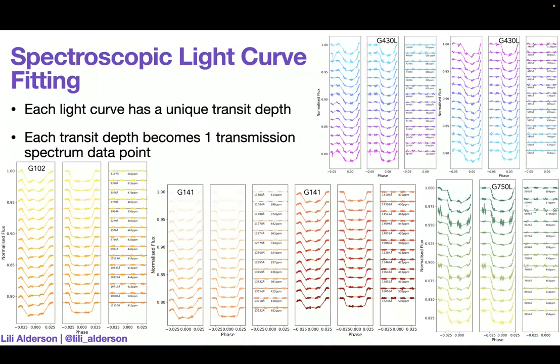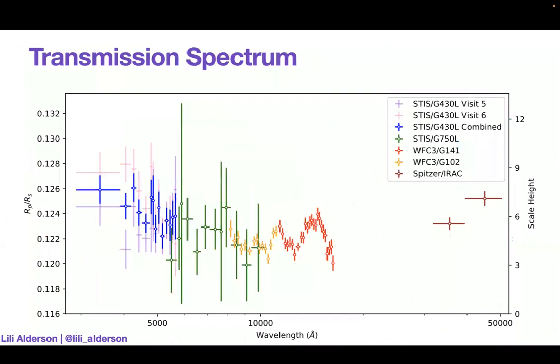We fit our HST data using ExoTiC-ISM, which is an instrument systematics marginalization package developed by Hannah Wakeford. And then the Spitzer light curves were fit following methods of May and Stevenson 2020. And that work was done by Erin May, who is at Johns Hopkins APL. We then want to fit our spectroscopic light curves. Here, each one of these light curves corresponds to one of the wavelength bins that you saw before. And each of these light curves is going to have a unique transit depth. And then each of those transit depths becomes one transmission spectrum data point. If you kind of smush all of this together into one plot, what you get is your transmission spectrum. We've got our STIS observations in the optical through to the near infrared where we've got WFC3 and then Spitzer photometry out in the infrared.